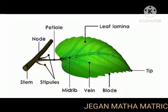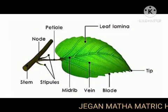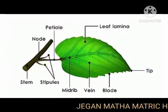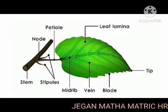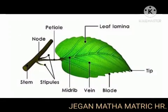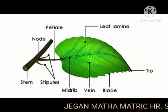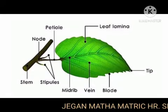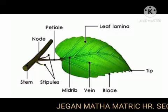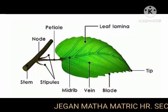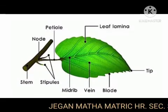Lamina is otherwise called the leaf blade or epipodium. The expanded flat green portion of the leaf is the blade or lamina. It is the seat of photosynthesis, gaseous exchange, transpiration, and most of the metabolic reactions of the plant. The lamina is traversed by the midrib, from which arise numerous lateral veins and thin veinlets.